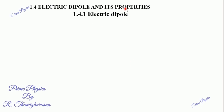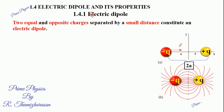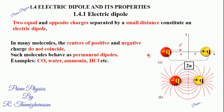Let's talk about Electric Dipole — two equal and opposite charges, plus Q and minus Q. These are two point charges of the same magnitude but opposite sign, separated by a small distance. The distance between them is 2A. This is the Electric Dipole.